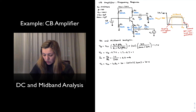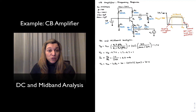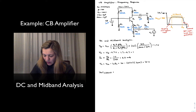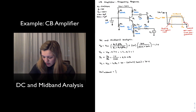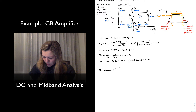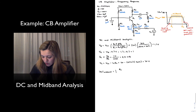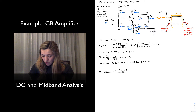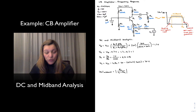So this is my DC bias point. For my mid-band analysis, I'm going to assume all the coupling and bypass capacitors are acting as short circuits, meaning they're letting the signals of interest through. For a common base amplifier, the magnitude of the voltage gain is equal to the resistance connected to the collector divided by the resistance connected to the emitter. Notice that I am neglecting RE2 because it is being bypassed by capacitor CC1, which is now a short circuit.